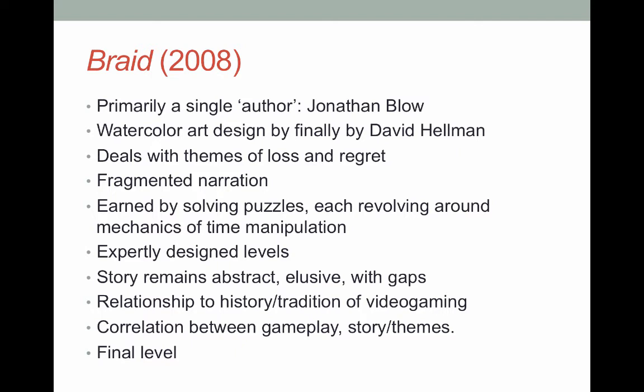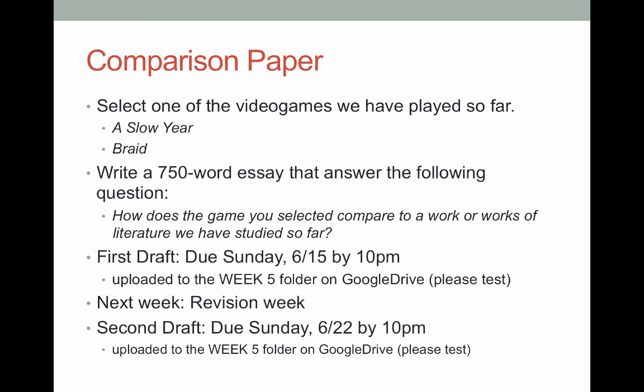Enjoy Braid. If you have any questions about playing it, how to get access to it, or where to find it, please let me know — send me an email or post something on Google Plus. So the comparison paper this week: first thing you want to do is select one of the video games we've played so far. You can pick A Slow Year or Braid — it's up to you, either one. You're going to write a 750-word essay that answers the following question: how does the game you selected compare to a work or works of literature we've studied so far?